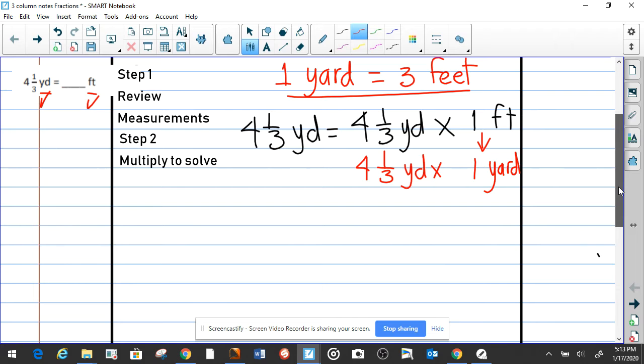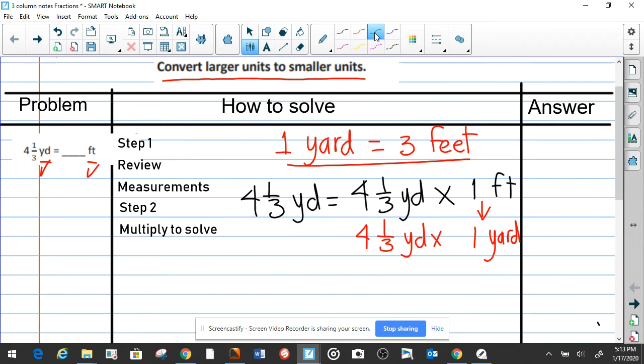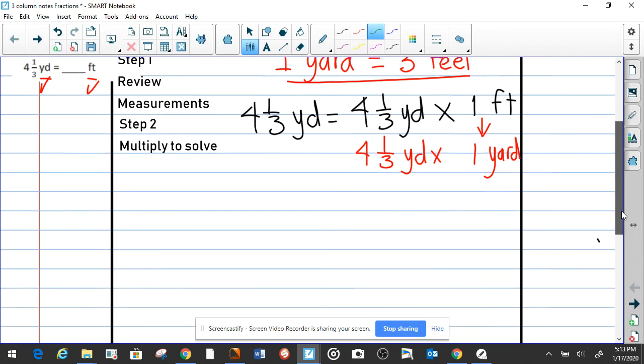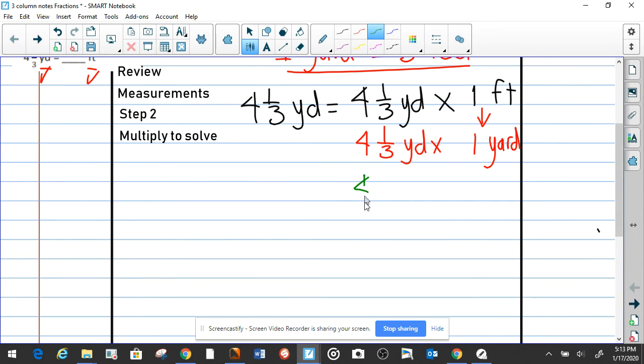I'm taking it through all the steps so you can see clearly how things add up here. Now we're going to rewrite again: 4 and 1/3 of a yard times. We said 1 yard equals 3 feet, correct?